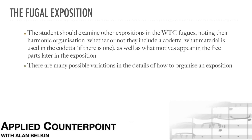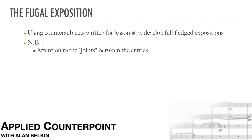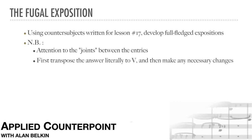There are many possible variations in the details of how to organize an exposition. For Bach, each fugue is a real, serious musical composition to be worked out in ways that fit the character of the subject and countersubject. Once having examined several Bach fugues, students should return to the countersubjects written for Lesson 17 and develop some of those combinations into full-fledged expositions. Pay special attention to the details of the joints between the entries to make the overall effect as smooth as possible. When making the answer, first transpose it literally to the dominant, then make any necessary changes if a tonal answer is appropriate. Write for real instruments or voices — the goal is to compose something that really sounds good.